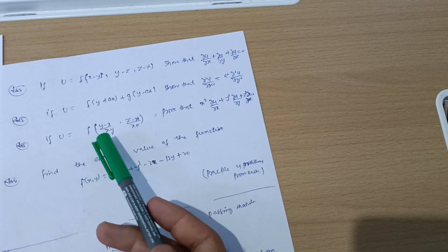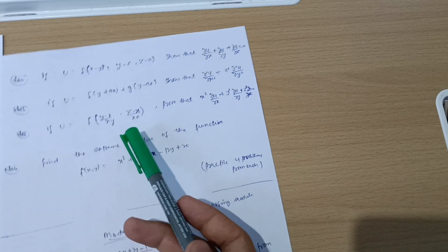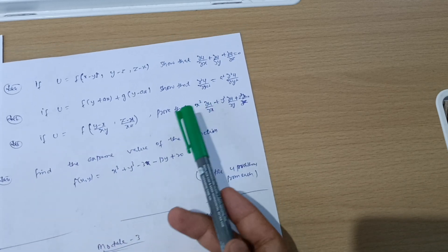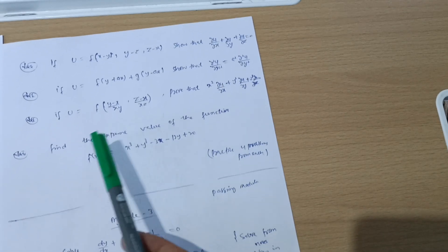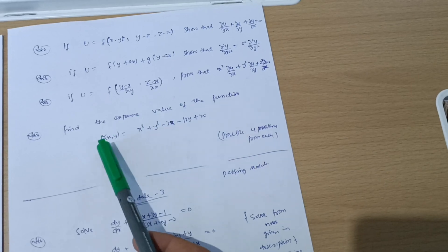If u = f((y-x)/xy, (z-x)/xz), prove that x² ∂u/∂x + y² ∂u/∂y + z² ∂u/∂z = 0. Next we have: find the extreme value of the function f(x,y) = x³ + y³ - x - 12y + 20.